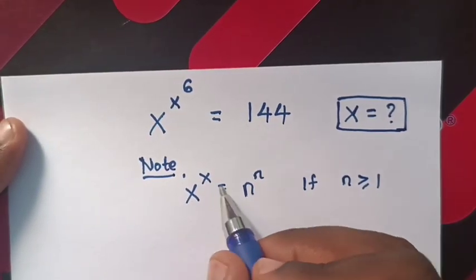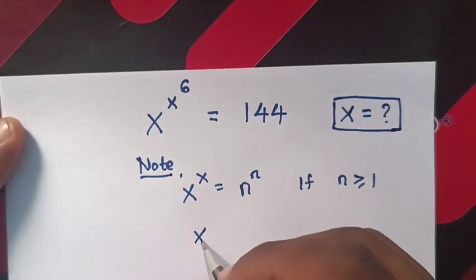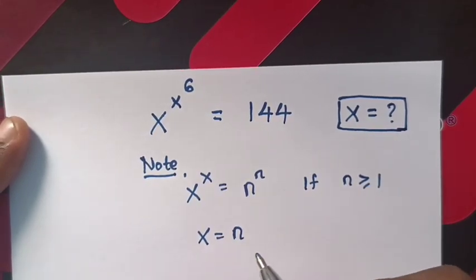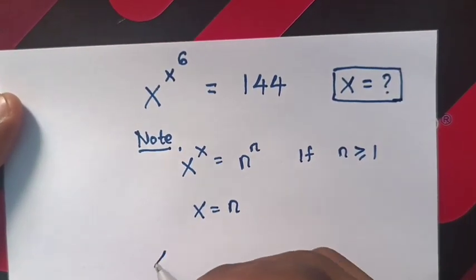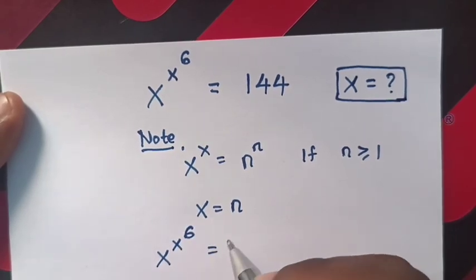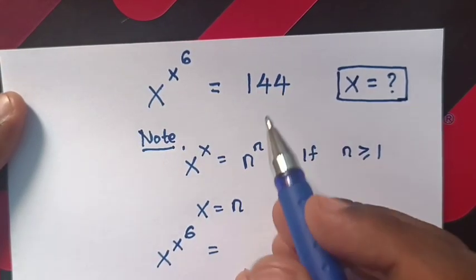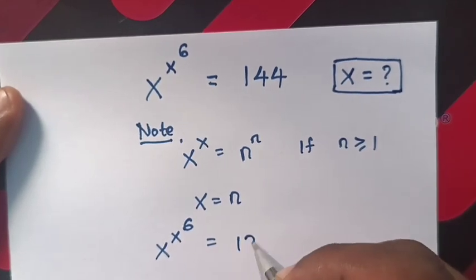So when you compare the powers, x equals n. Now from our equation, x power x power 6 equals 144 is the same as 12 squared.